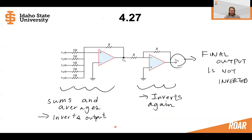So this circuit could describe our final two-stage amplifier. The first stage sums and averages, but unfortunately inverts. Stage two inverts again, so we have a negative voltage and then a negative voltage. Multiply those together, it's a positive voltage, and so the final output is not inverted. We've summed up five voltages, and we've averaged it by dividing by one-fifth.